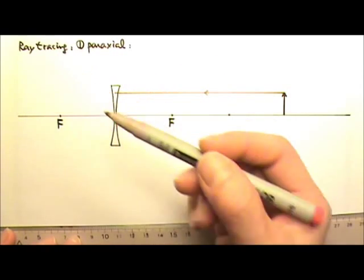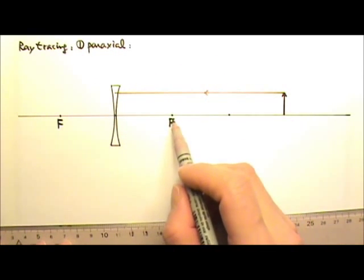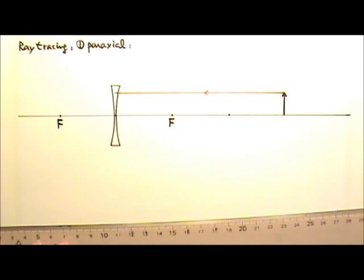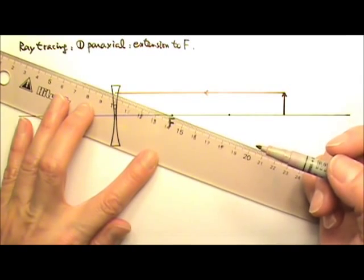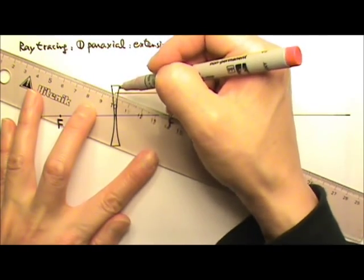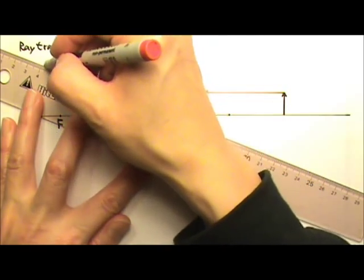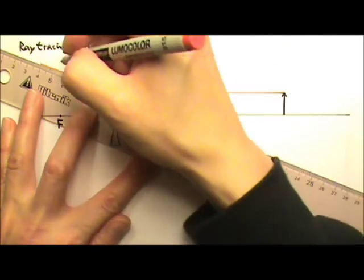It is going to get diverged. It is not going to go through the focal point, but its extension is going to go through the focal point. So we are going to draw the ray so the extension goes to the focal point. The ray would bend that way. So its extension goes to the focal point.